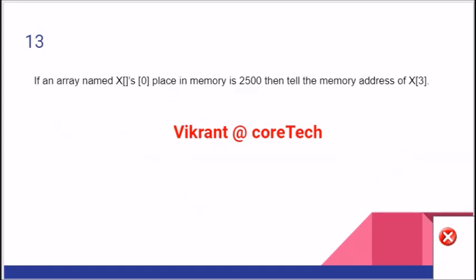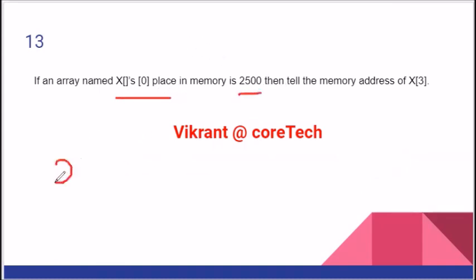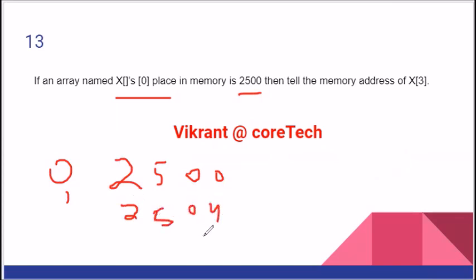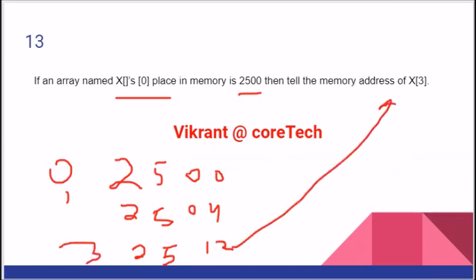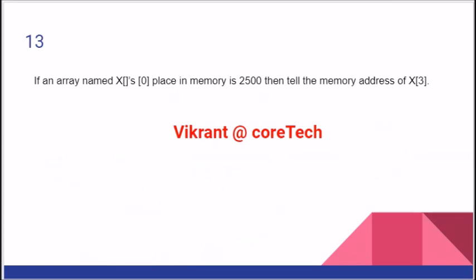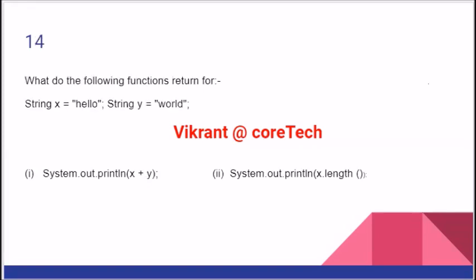If we have an array where index 0 is placed at address 2500, then index 1 will be placed at 2504, index 2 at 2508, and index 3 at 2512. That will be the value of the third index. Keep in mind that the data type of array X is integer.